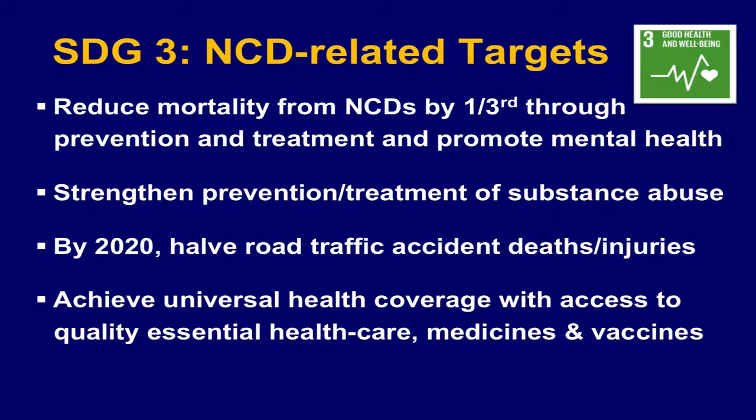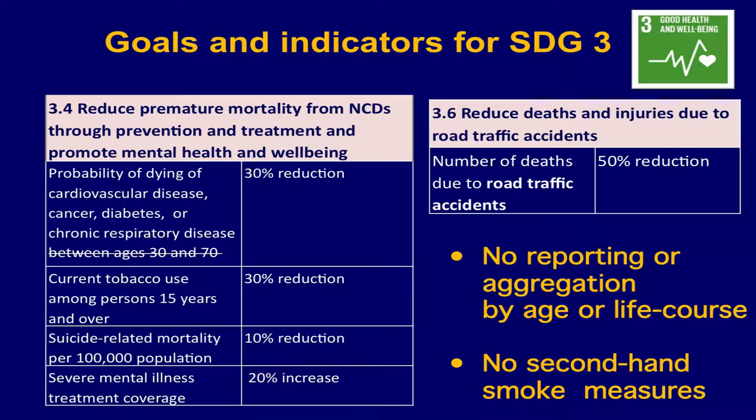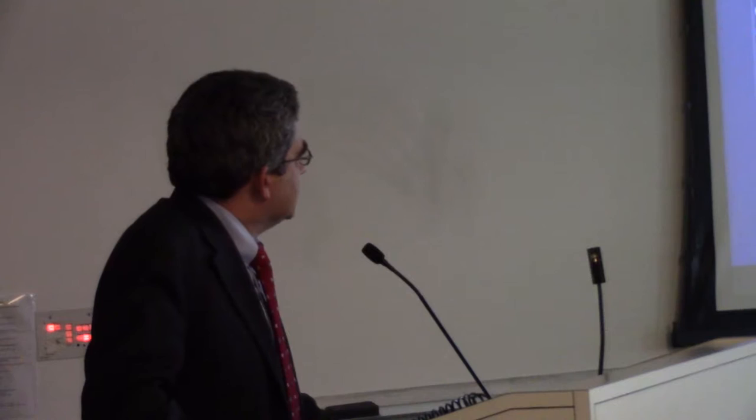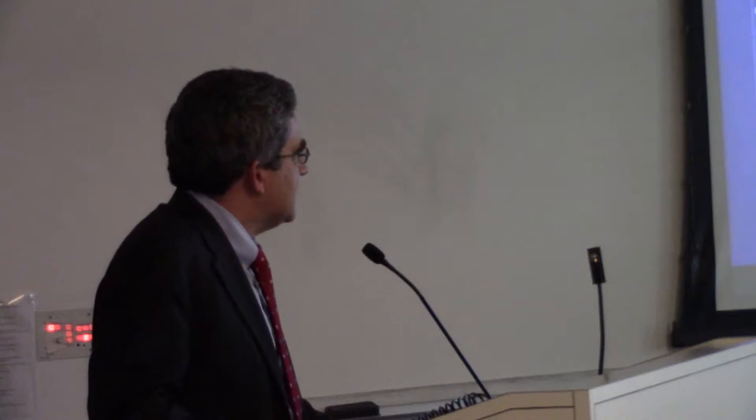Sustainable Goal 3 has an NCD-related target. The UN has come up with targets and indicators to reduce mortality from NCDs by a third, to strengthen prevention and treatment, and to achieve universal coverage. There was a lot of advocacy that went into the indicators. For example, there's no secondhand smoke measure, but there is at least the recognition that NCDs affect all ages. That crossed-out line between ages 30 and 70 was the original proposed indicator.